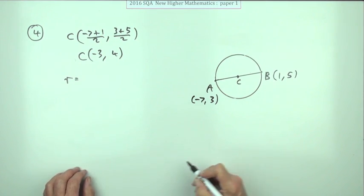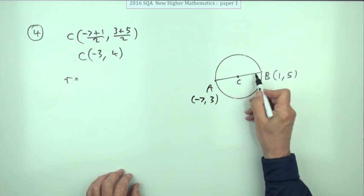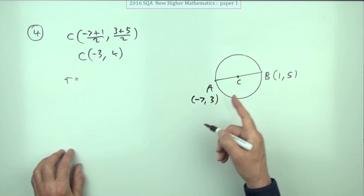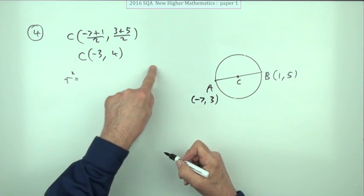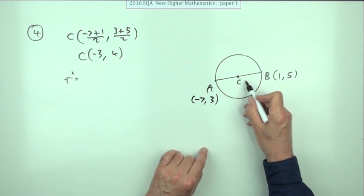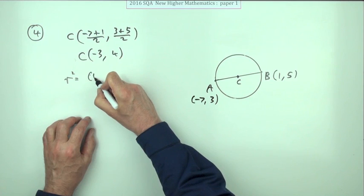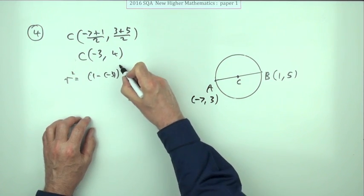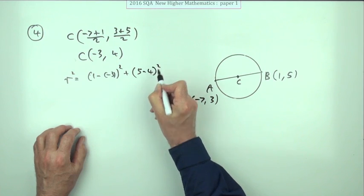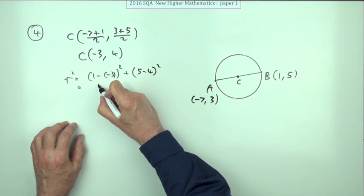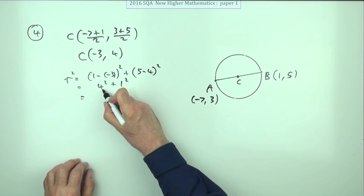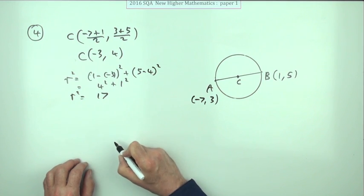Now the radius. You get the radius by working out the distance between either of these points, or even A and B and halving it, but C and B would be the best one. So radius squared — you could do the square root with Pythagoras, but you'd just have to square it afterwards, so just work out R squared straight away. That'll be the difference in the x coordinates: 1 take away negative 3, meaning it's 4 along. And the difference in the y coordinates: 5 minus 4, meaning it's just 1 up. So that's 4 squared plus 1 squared, which is 16 plus 1 — R squared is 17.